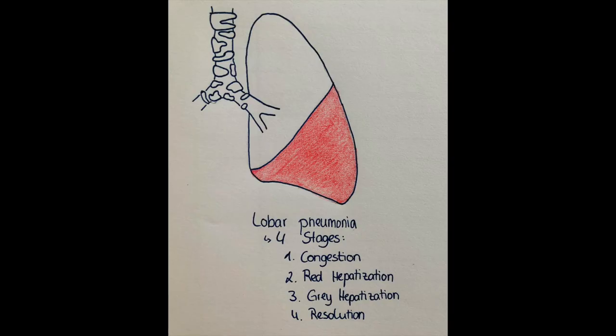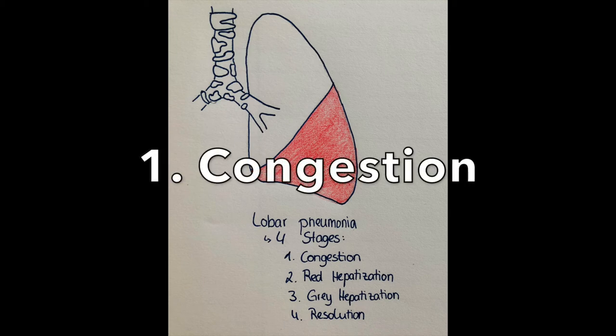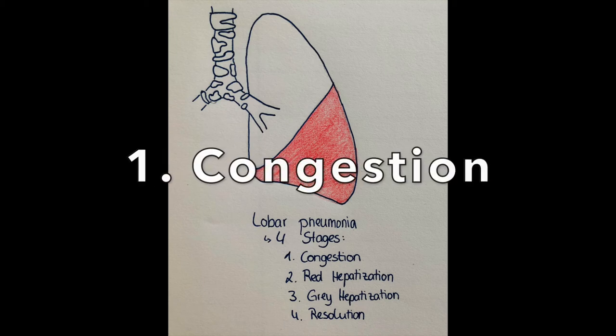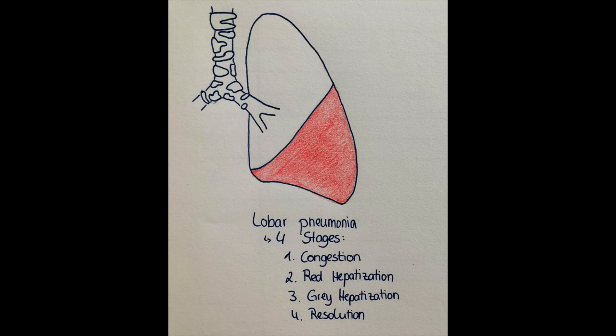Lobar pneumonia has four characteristic stages important to memorize. The first stage is congestion, usually in the first 24 hours, where outpouring of protein-rich exudate happens into the alveoli, leading to stasis of the veins in the lungs. The lung appears heavy, edematous, and fluid-filled.